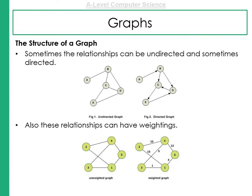When we're dealing with graphs, sometimes relationships can be undirected, and sometimes they can actually be directed. Sometimes these relationships can have weightings. Think of a map. The different distances between the different vertices.